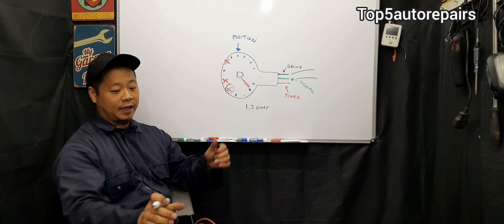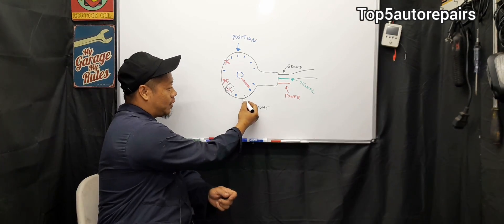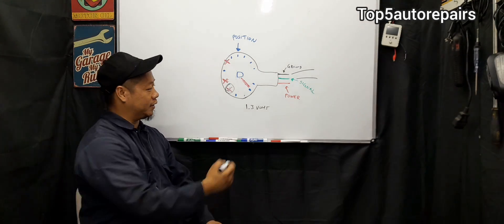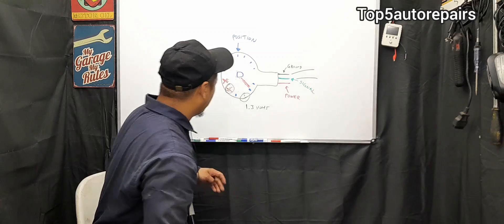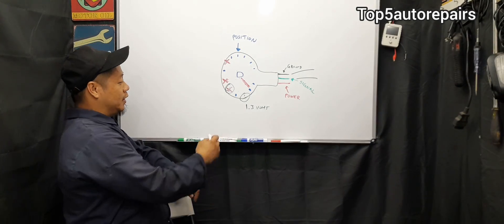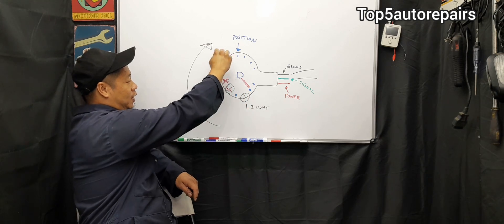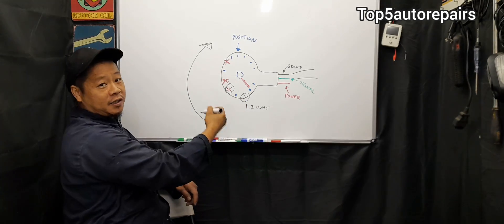Next thing you want to do is look at your multimeter, and maybe it might start somewhere on the low voltage side, for example, maybe 1.3 volts. So that's going to be idle voltage. Next thing you want to do is you want to accelerate the vehicle slowly. As you are accelerating, this arm starts to sweep across, and when it starts to sweep across, this voltage should gradually increase.